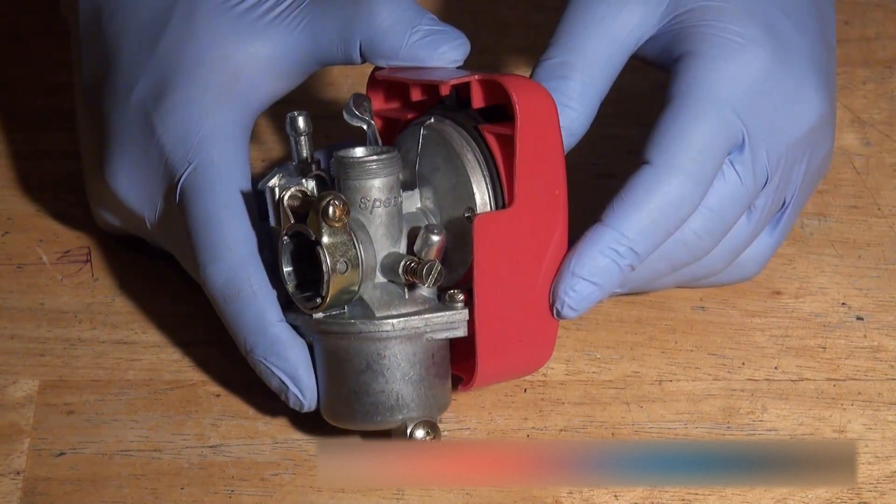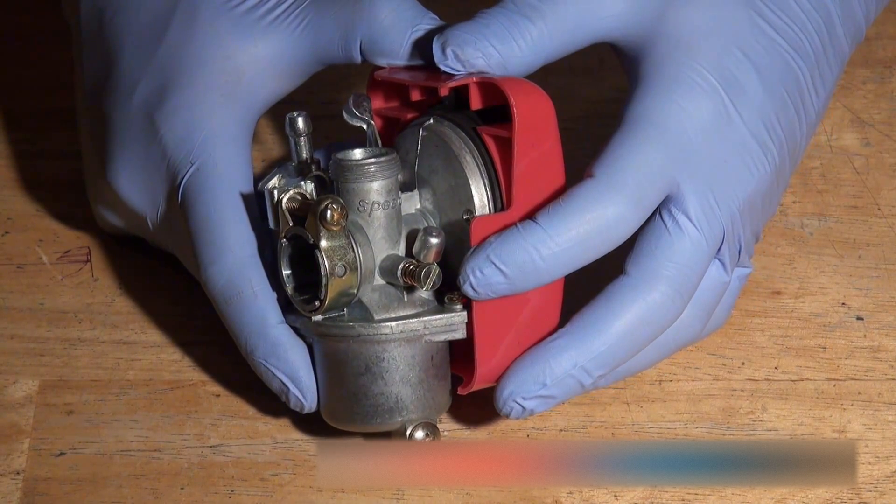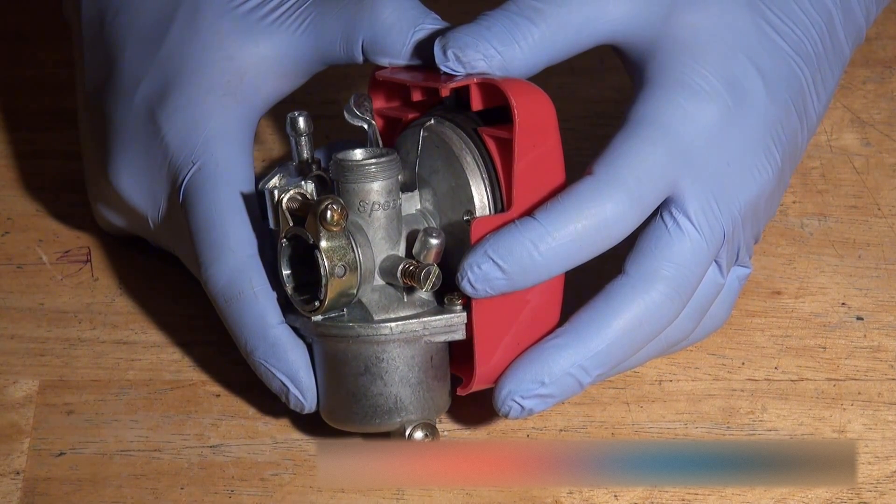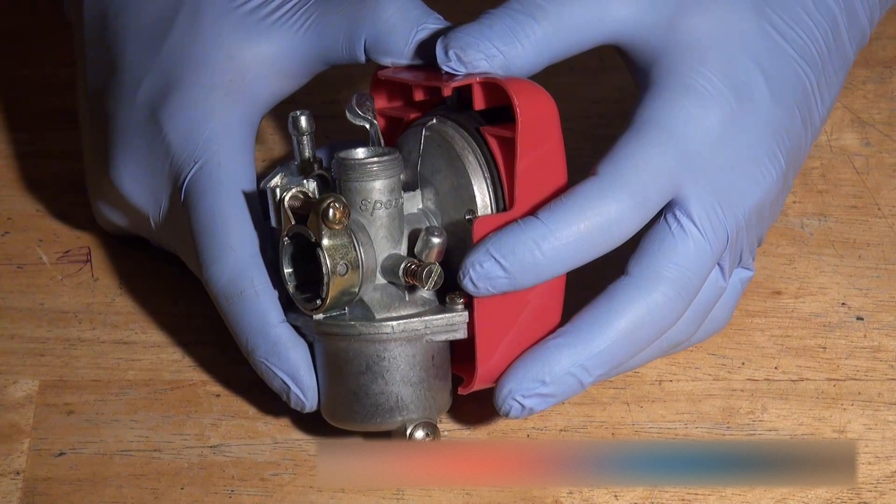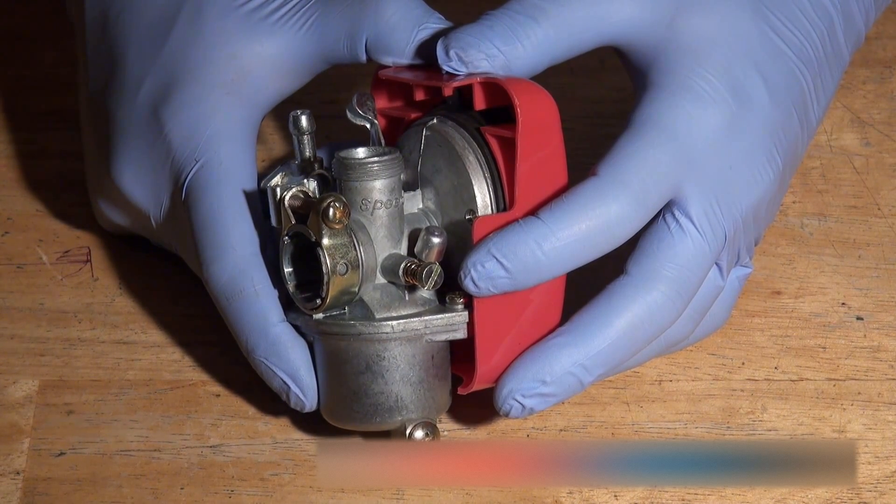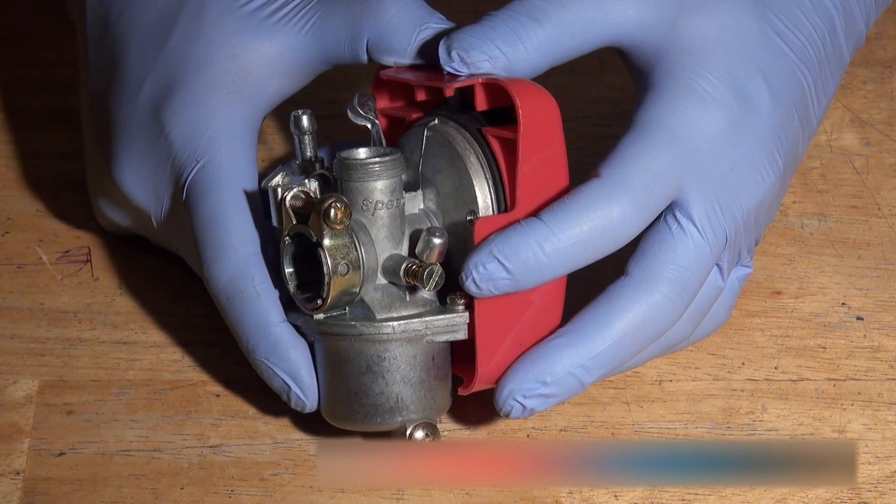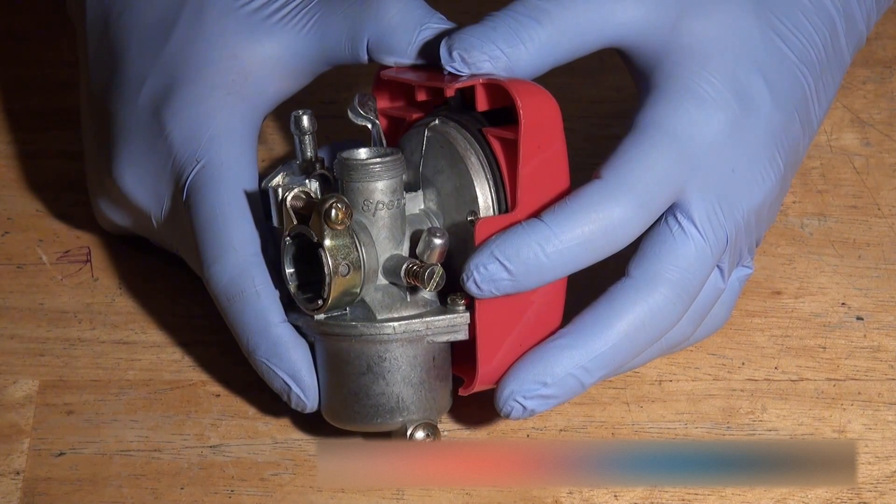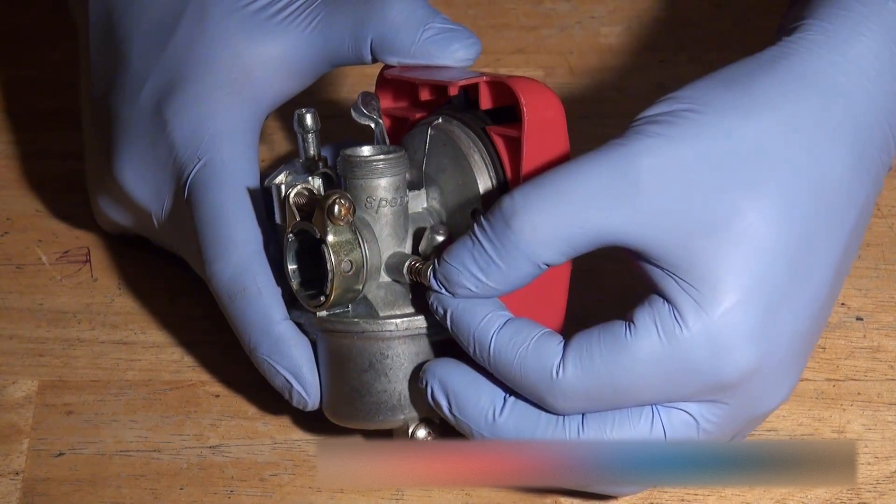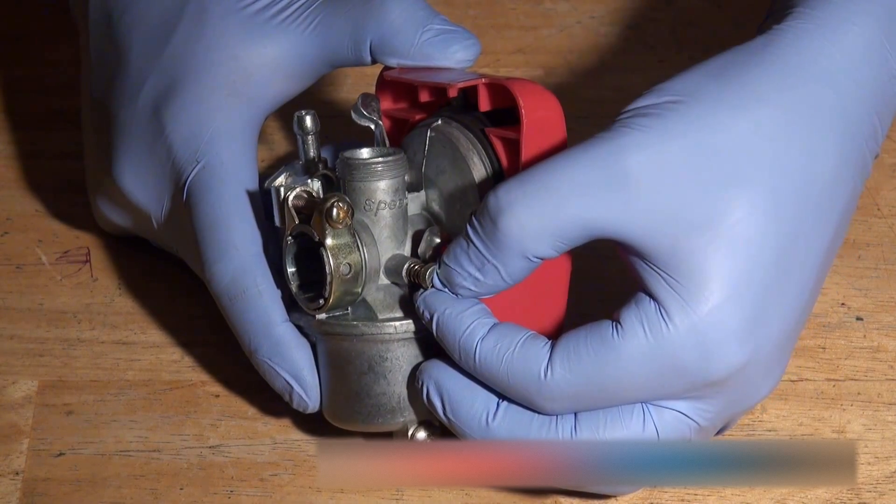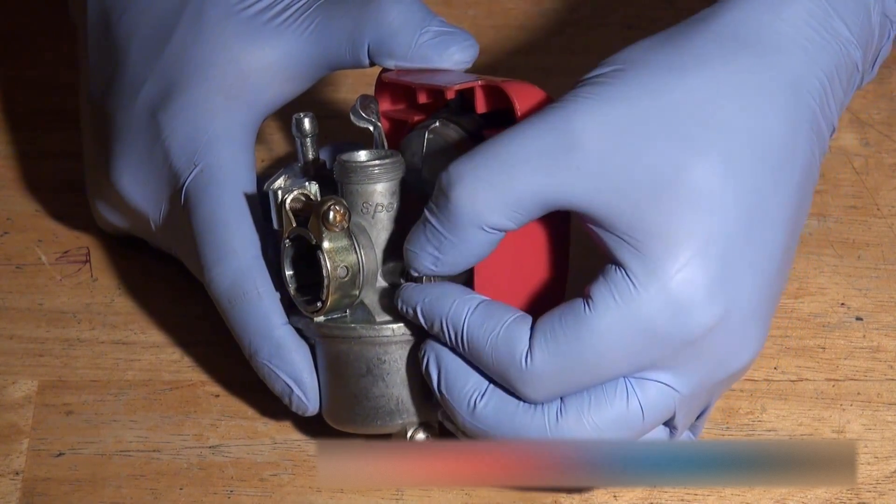And then when it's going in as far as it will go, what we do is we take the screwdriver and we start screwing it in the counter-clockwise direction. And you have to unscrew it counter-clockwise three and a half to four and a half turns.